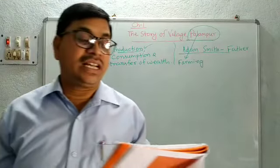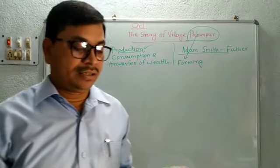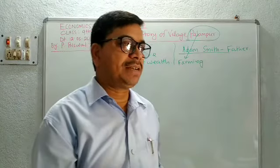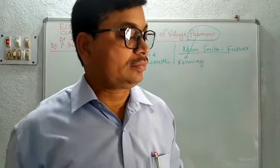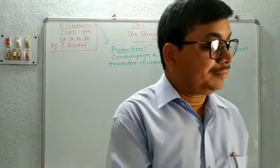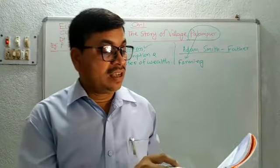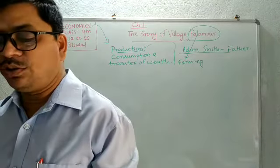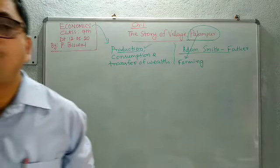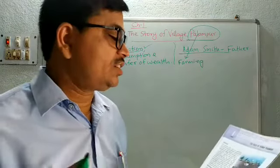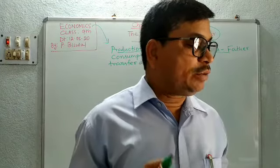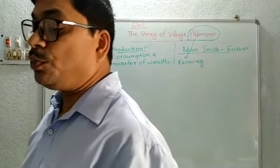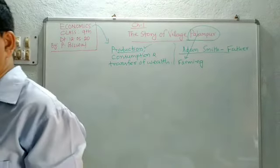For example, natural resources such as land, water, and air; man-made items like different machines and tools; human efforts, human knowledge — and money also. All these are required for the production of any goods and services. As we read through the story of Palampur, we will learn how various resources combine to produce goods and services in the village.